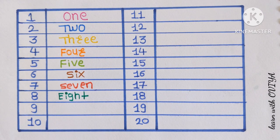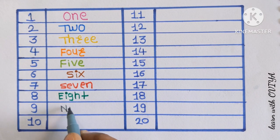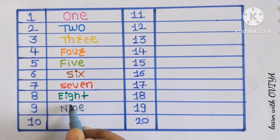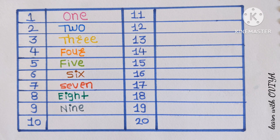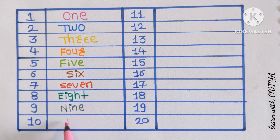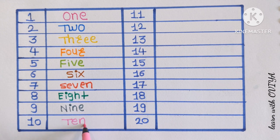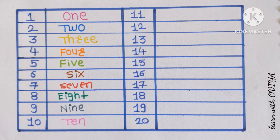Next number is 9. N-I-N-E. 9 with a gray color. Can you say that? 9 in a gray color. T-E-N. 10 in a pink color.